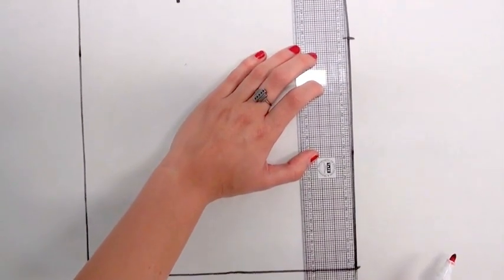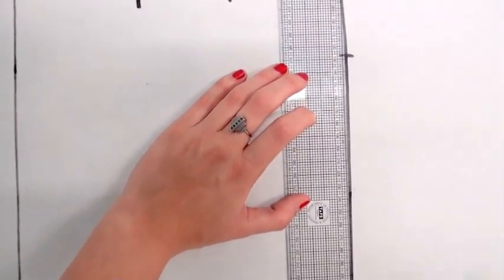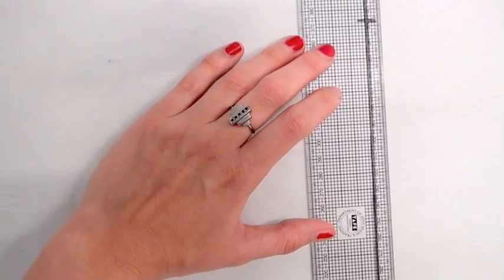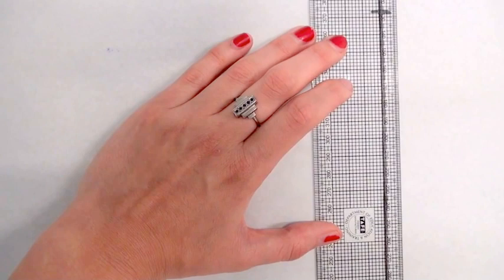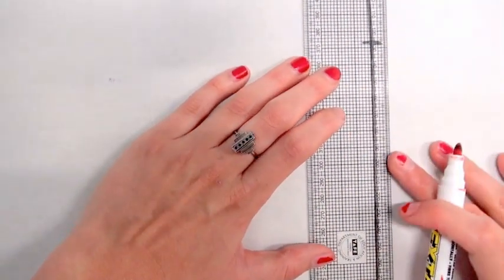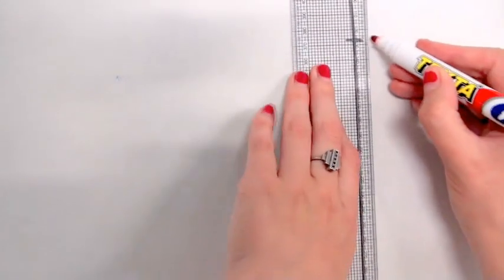In this example, I want to put one centimeter seam allowance onto this edge here, so I'm going to move my ruler and put my seam line in line with the one centimeter here—that's the first heavy line.